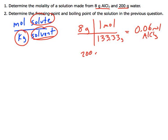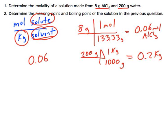And then I need to know how many kilograms of solvent, so there's 200 grams of water, and for every 1,000 grams there's one kilogram. So that's 0.2 kilograms of water. So my molality now is simply going to be 0.06 moles divided by 0.2 kilograms. When I do that math out, I'm going to get 0.3 moles per kilogram.